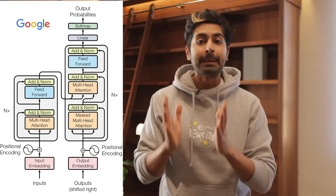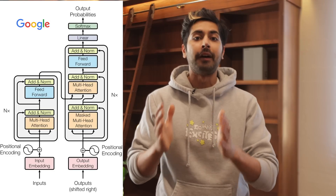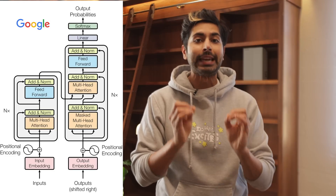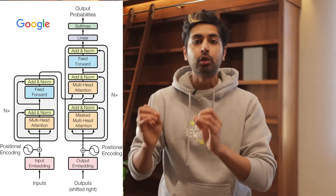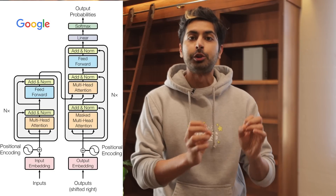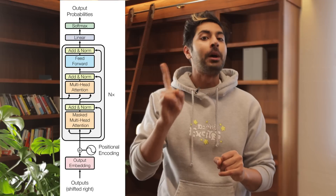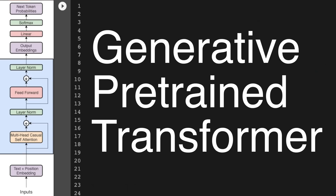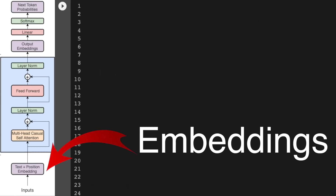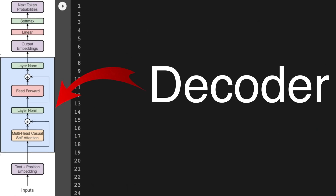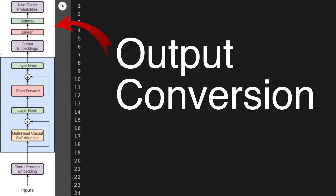The model was a simplified version of the transformer, originally introduced by Google for language translation, but this time without the encoder. This generative pre-trained transformer, or GPT model, only had three main components: embeddings, a decoder, and output conversion.